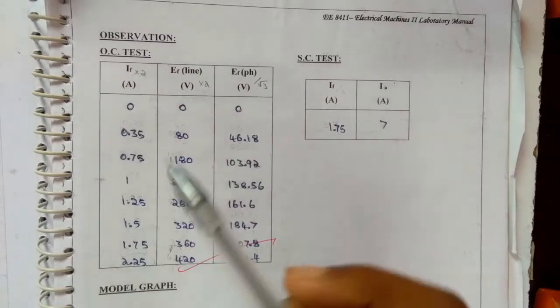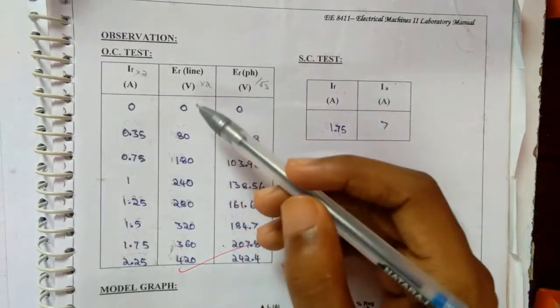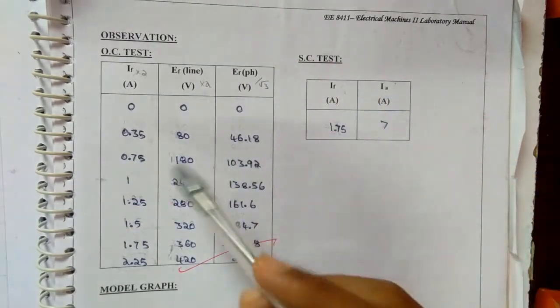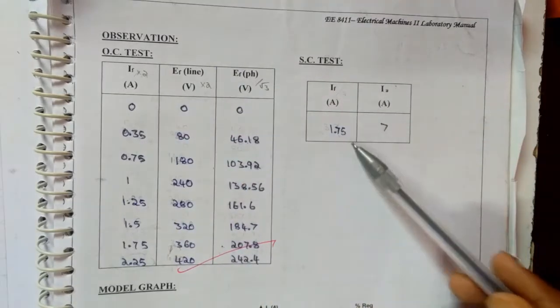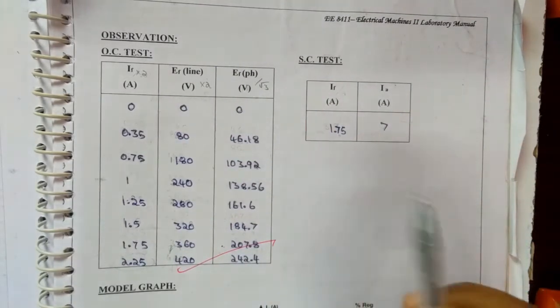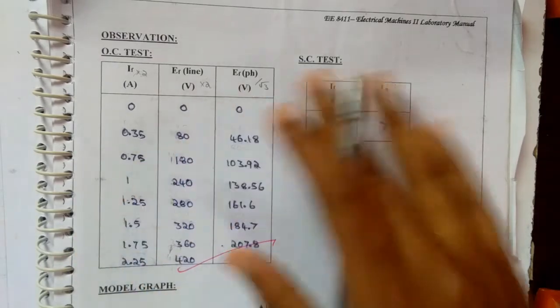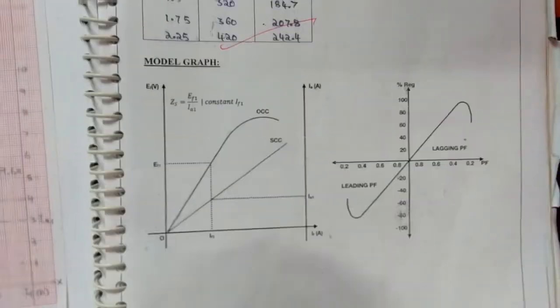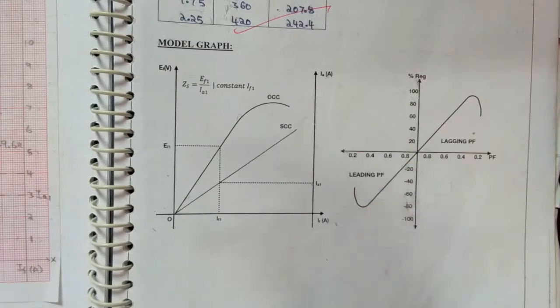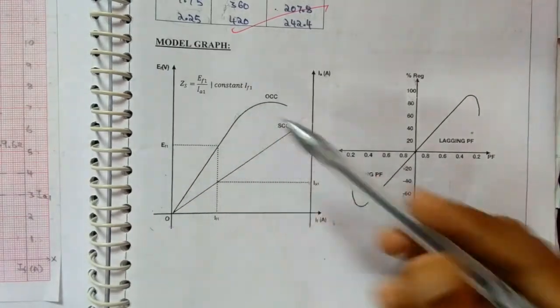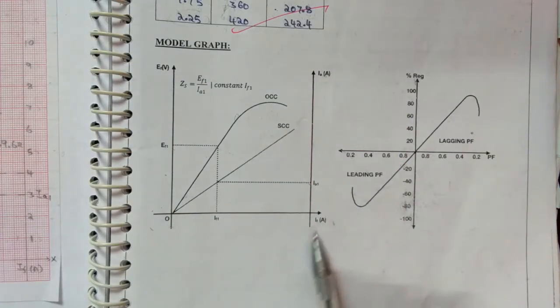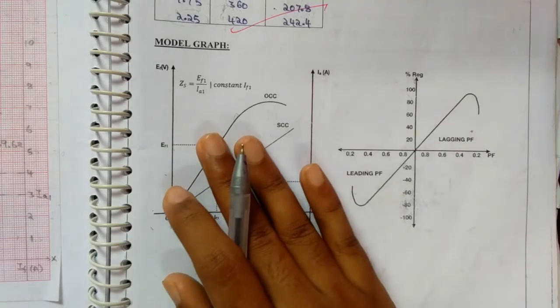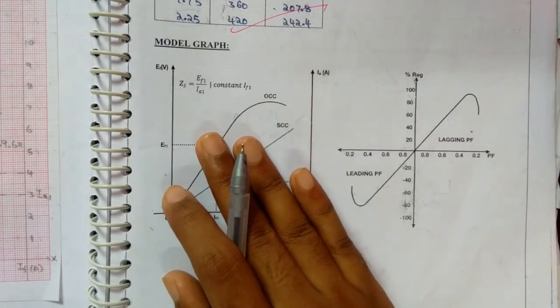After completing the OC-SC test, we are going to note down the values. The values came or listed below here. For SC test, there will be only two values. So with these values, we are going to draw a graph like this one. Here we plot EF, IA. And then in X axis, we are going to plot IF. So this graph is very much important for MMF method.